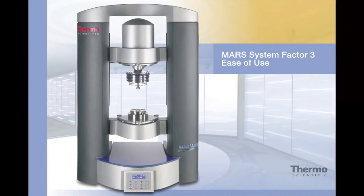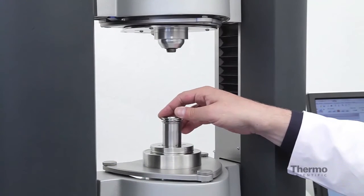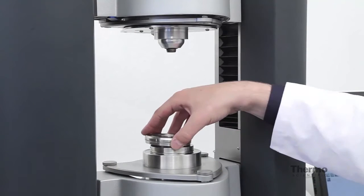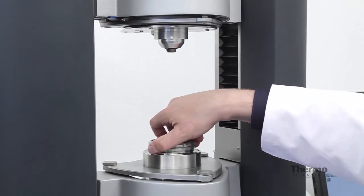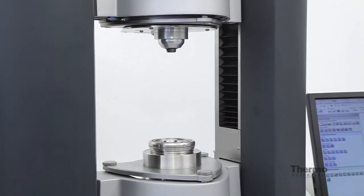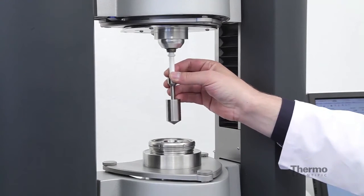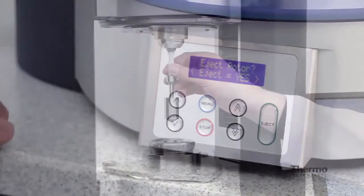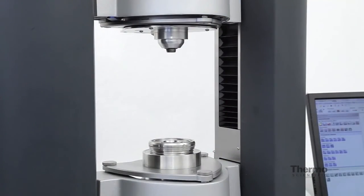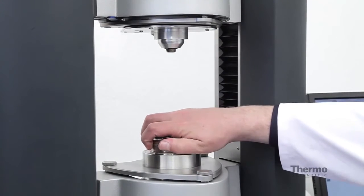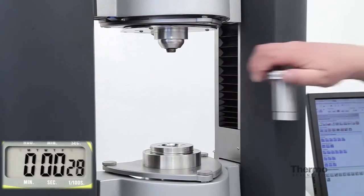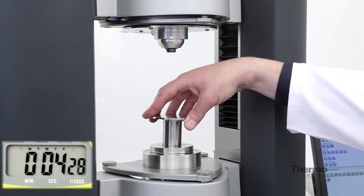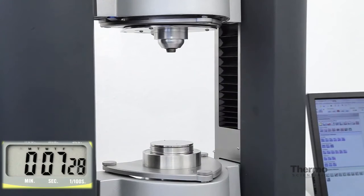Ease of use. Of course some of the well-known ease of use features from our previous MARS systems have been implemented into the new MARS. Like for instance, no matter if you want to work with Peltier temperature controlled cylinder geometries, the design for optimized temperature calibration or if you want to work with standard Peltier plate geometries, our measuring plate insert for the Peltier cylinder lets you do both within seconds of downtime.